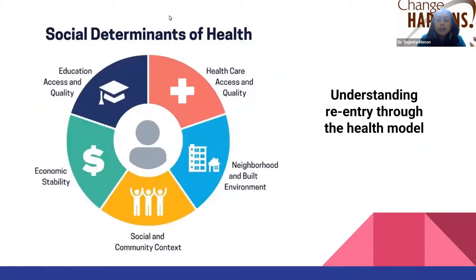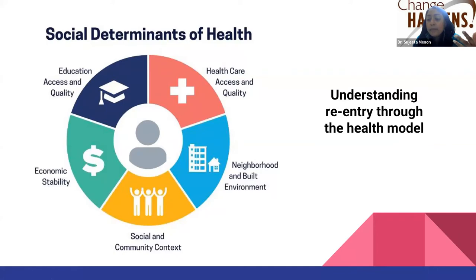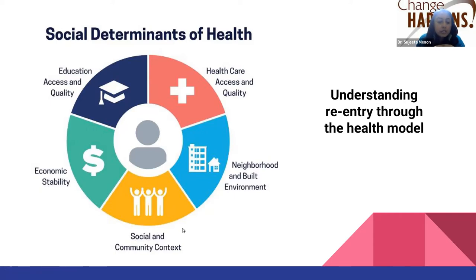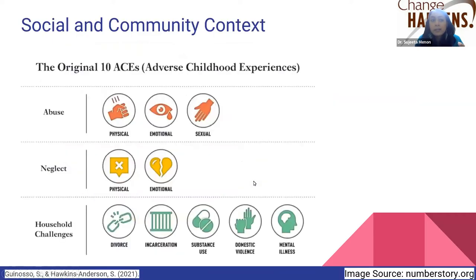We're understanding reentry through the health model. Social determinants of health are various areas present in our life that are vital to our growth, well-being, health, mental health, and success in life. These include: education access and quality, healthcare access and quality, neighborhood and built environment, social and community context, and economic stability. We'll start with the social and community context.